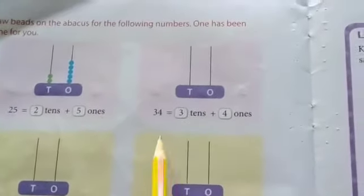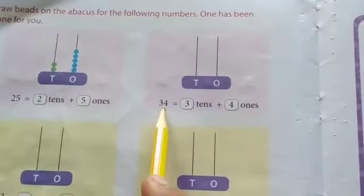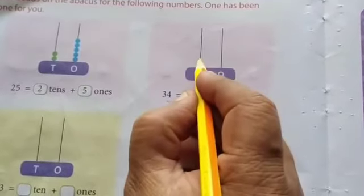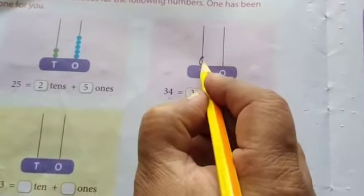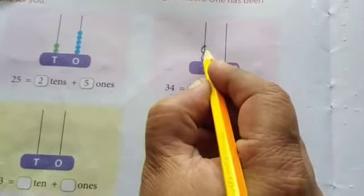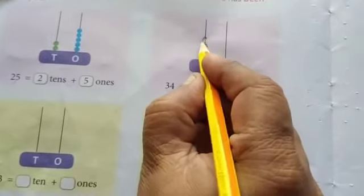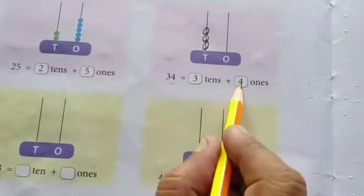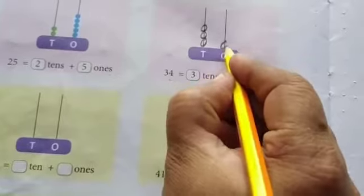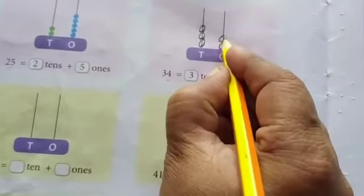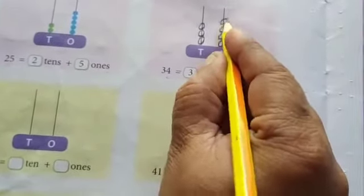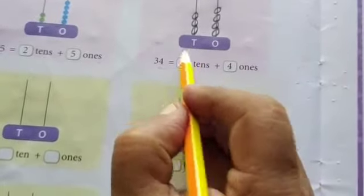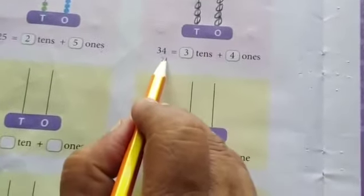The next number is thirty-four. Thirty-four has three tens, so we draw the beads in tens place — one, two, three, three tens. And how many ones? Four ones — one, two, three, four. Four ones plus three tens is equal to thirty-four.